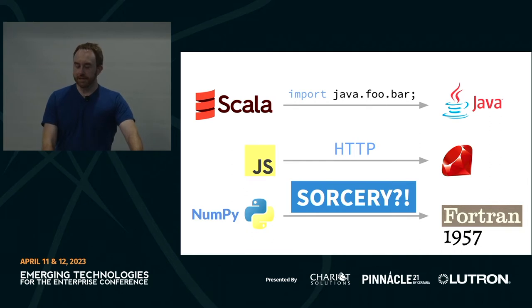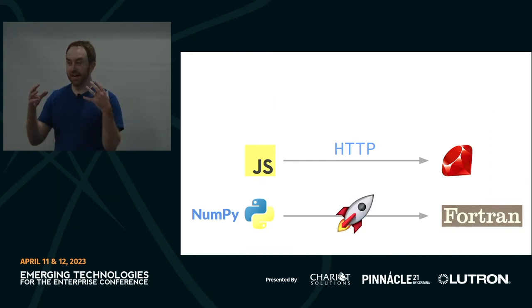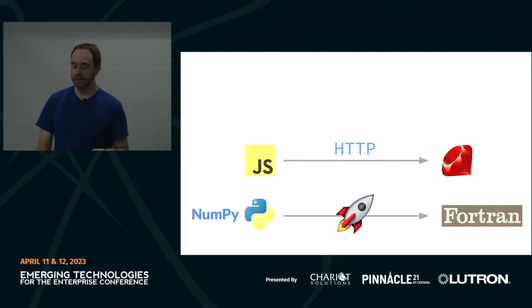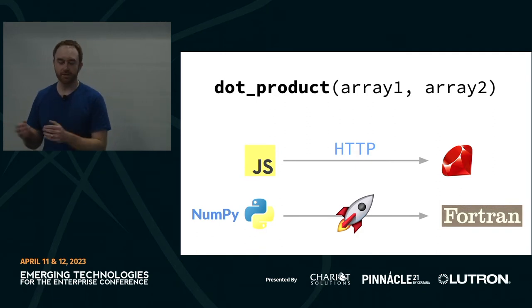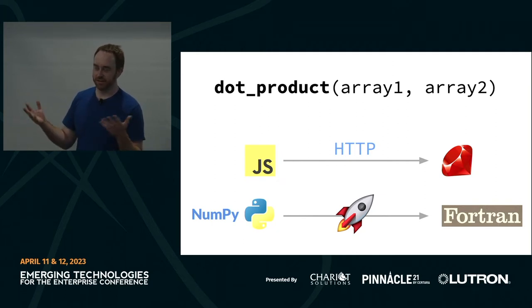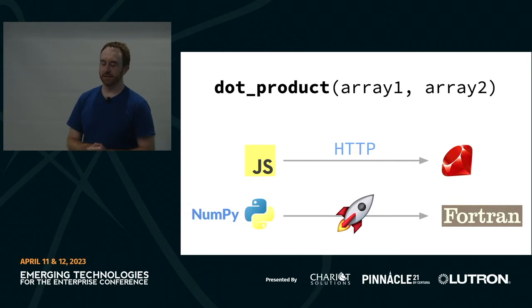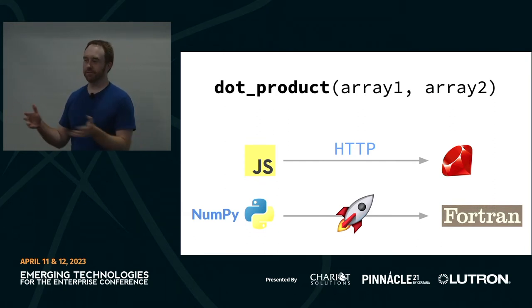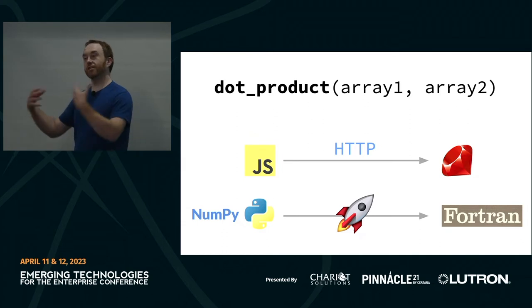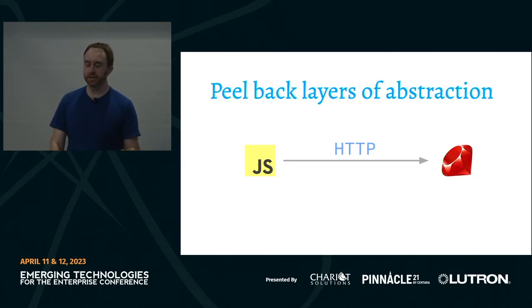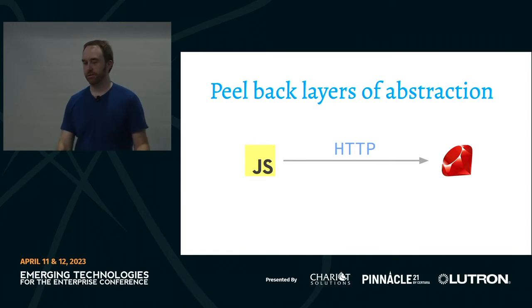To get there, let's start with familiar terrain: JavaScript calling Ruby over HTTP, then build our way up to what NumPy is doing with Fortran. We'll implement a dot product function — starting in Ruby, then we'll want to call it from another language. It's a simple function: takes two arrays of numbers and returns a number. We're going to peel back the layers of abstraction, starting with HTTP. We can break it into two pieces: building an HTTP request string, then sending it to a TCP socket.